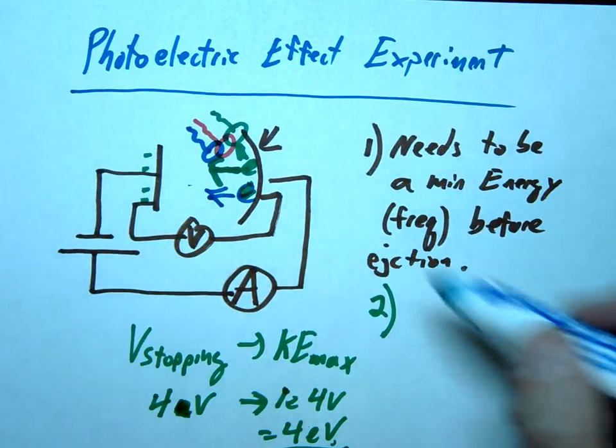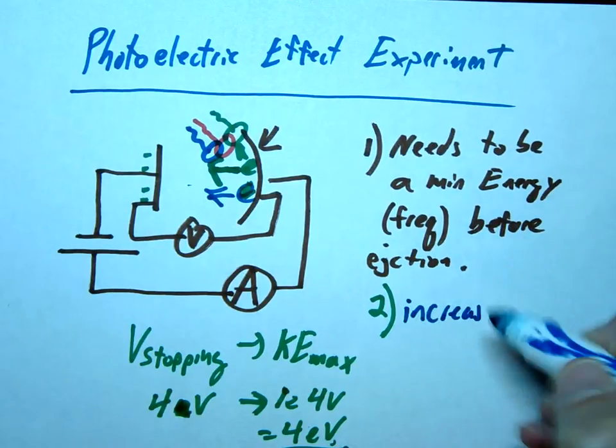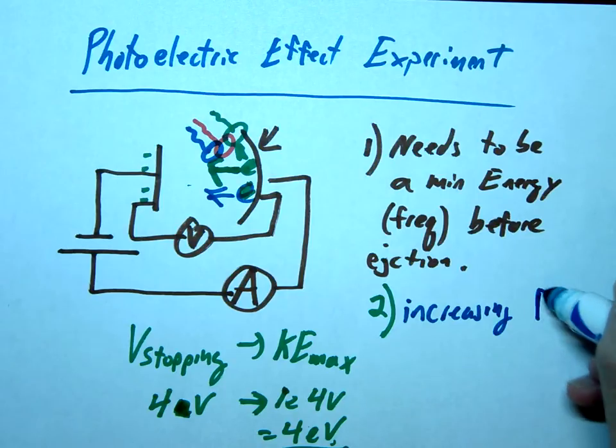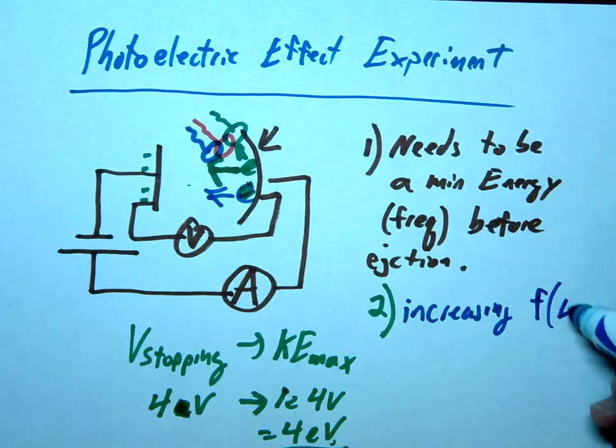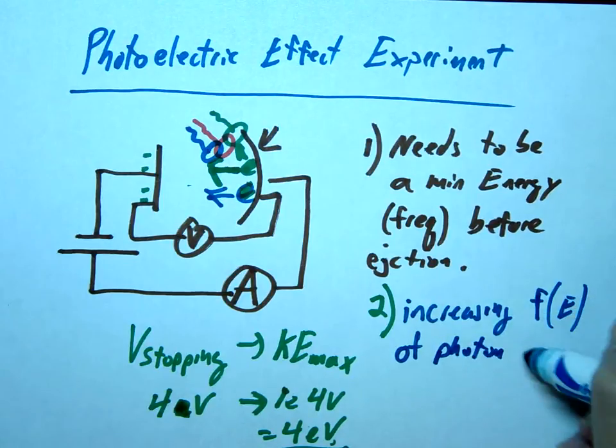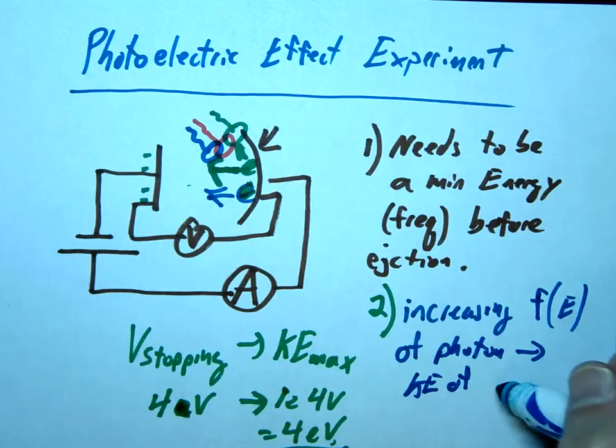So again, this was the second concept here, that increasing the frequency or energy of the photon is therefore going to increase the kinetic energy of the ejected electron.